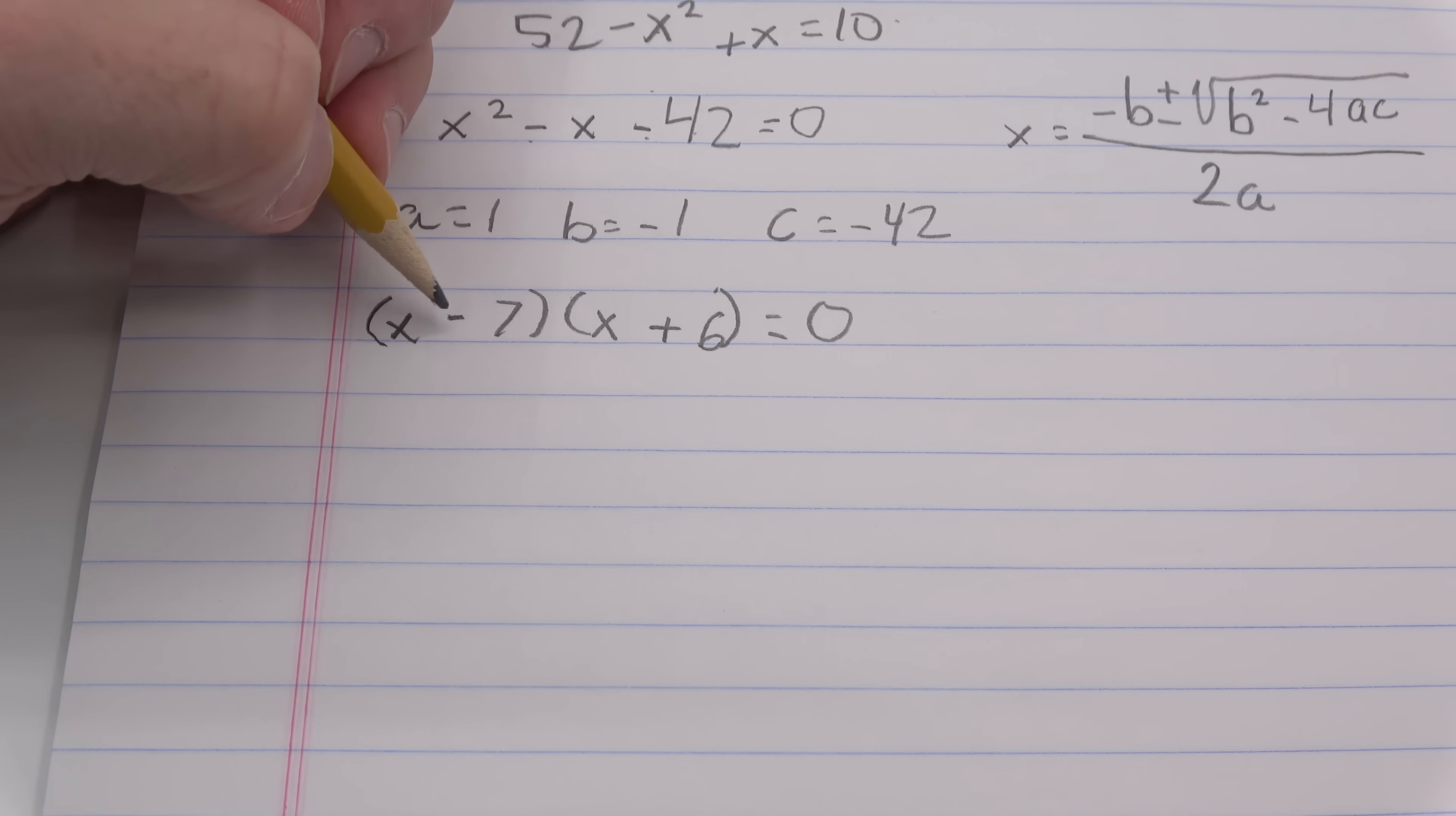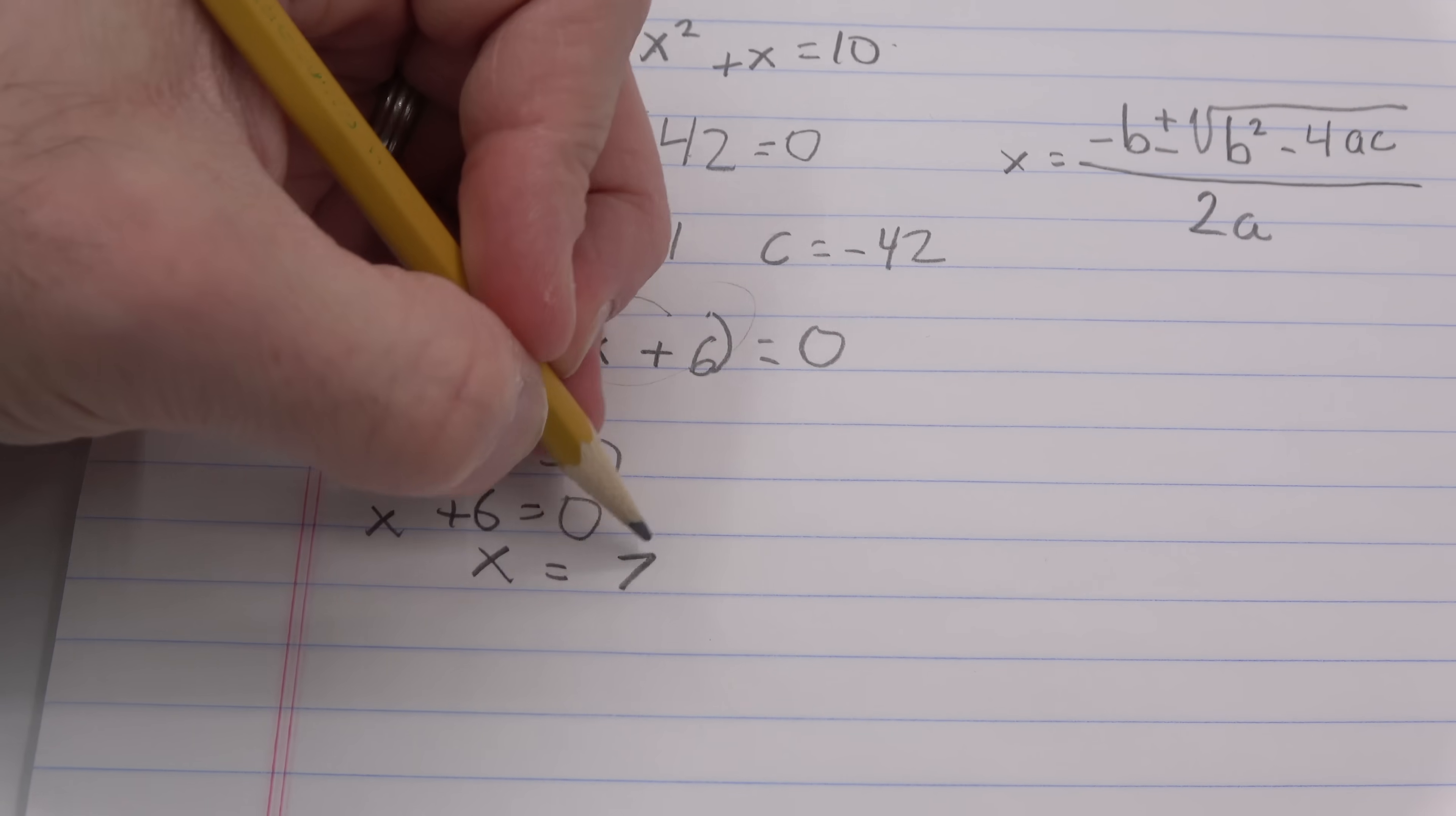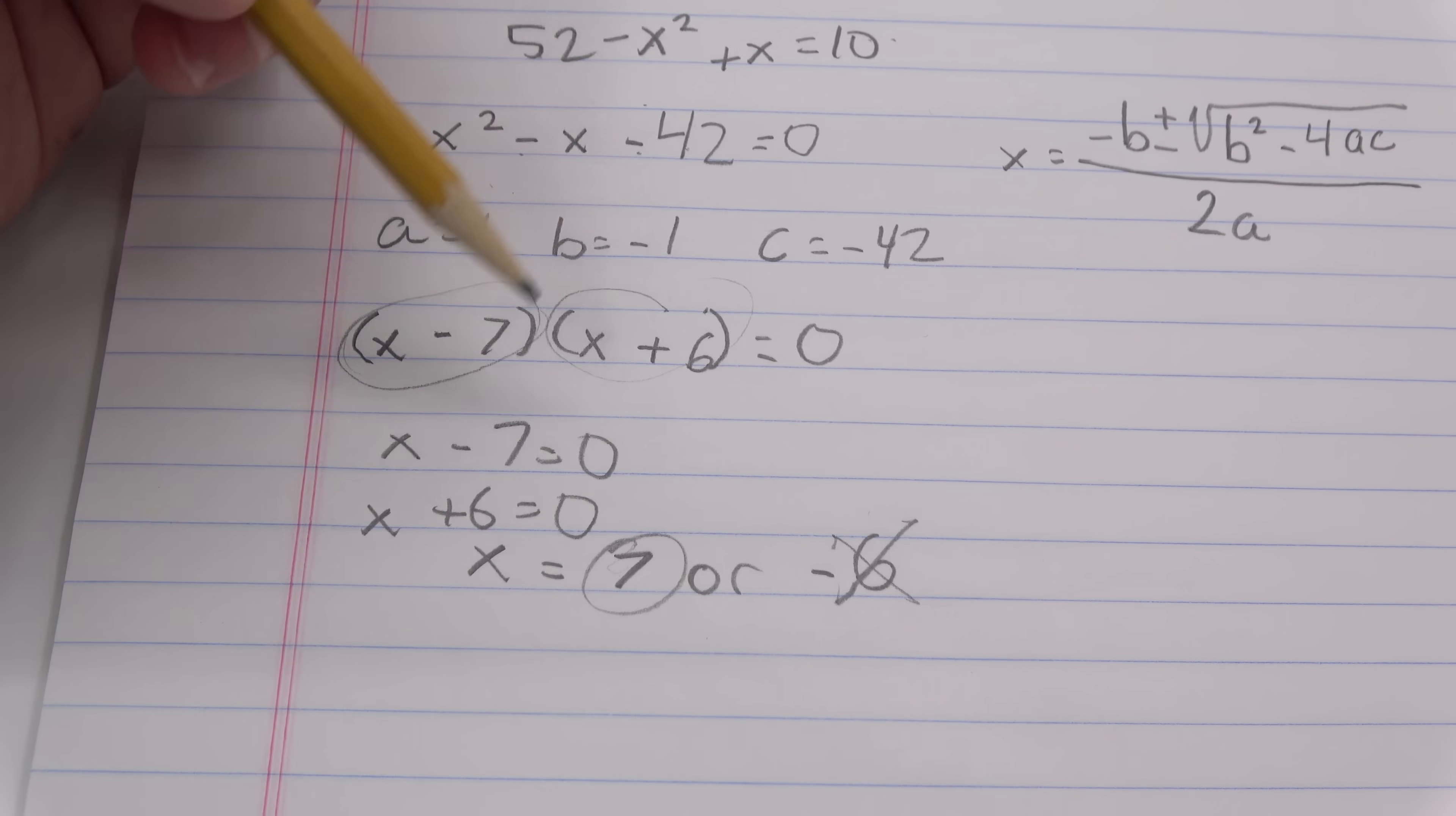That's it. So to get this to be 0, either this whole term is 0, or this whole term is 0. So you get two equations. x minus 7 equals 0, or x plus 6 equals 0. And that means that x can equal 7 or minus 6. So minus 6 is the answer that makes no sense, because we're talking about time. Time needs to be positive. So the answer is 7. That's the quadratic formula. That's the way to solve it by factoring.